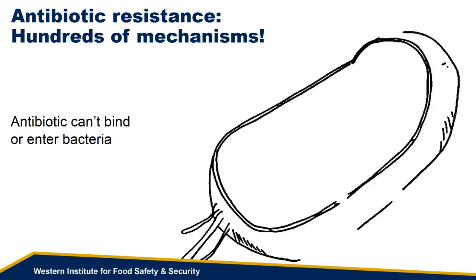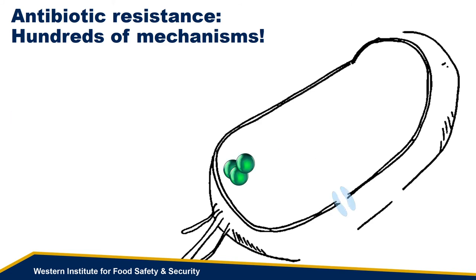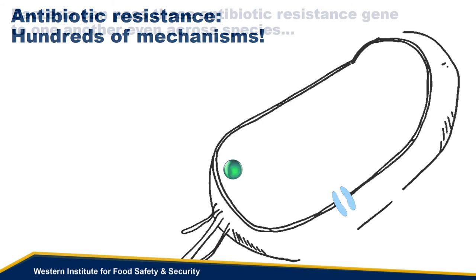Bacteria can develop resistance to antibiotics in hundreds of different ways. One of the most important resistance strategies is to evolve a change in its structure that makes it more difficult for an antibiotic to bind to or enter the bacteria. Some bacteria will develop enzymes to destroy an antibiotic if it does gain access into the cell. And finally, another common mechanism is for bacteria to develop special proteins to pump an antibiotic out of the cell.